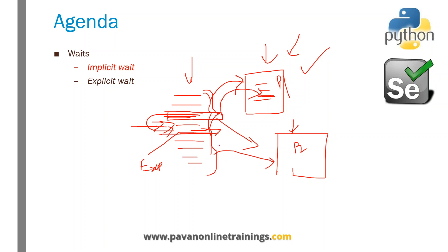In WebDriver there are two types of wait statements: implicit wait and explicit wait. WebDriver supports both of these types. In this video I'm going to explain about implicit wait and how to use the implicit wait command.